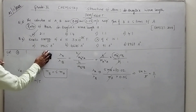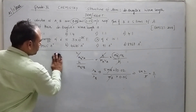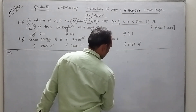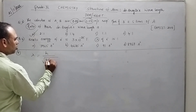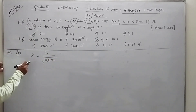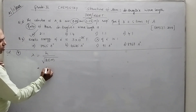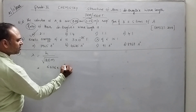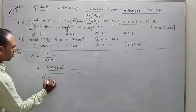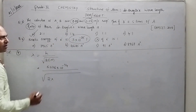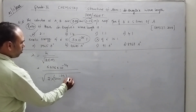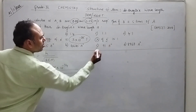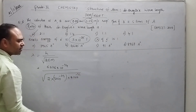We have solved question number 3. Now let us move to question number 4. They are giving kinetic energy, hence we use the last formula: lambda is equal to H by root of 2 into kinetic energy into mass. H is 6.626 into 10 to the power of minus 34 joule into second, by root of 2 into kinetic energy 3 into 10 to the power of minus 25 joule. And mass of electron is 9.1 into 10 to the power of minus 31 kg.